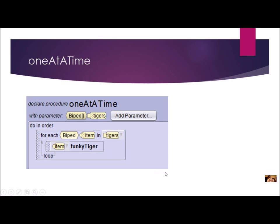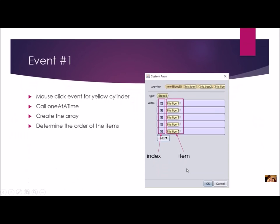Now that we've got our first procedure done, we're going to create an event to test it for incremental development. Our first event is going to be a mouse click for the yellow cylinder — when I click on it, it will call 'oneAtATime'. When I call this, the computer will ask me to create the array, and when I create the array, I determine the order of items. You can see here I'm creating an array — each index is shown and I determine what goes in index 0, index 1, index 2, and so on.